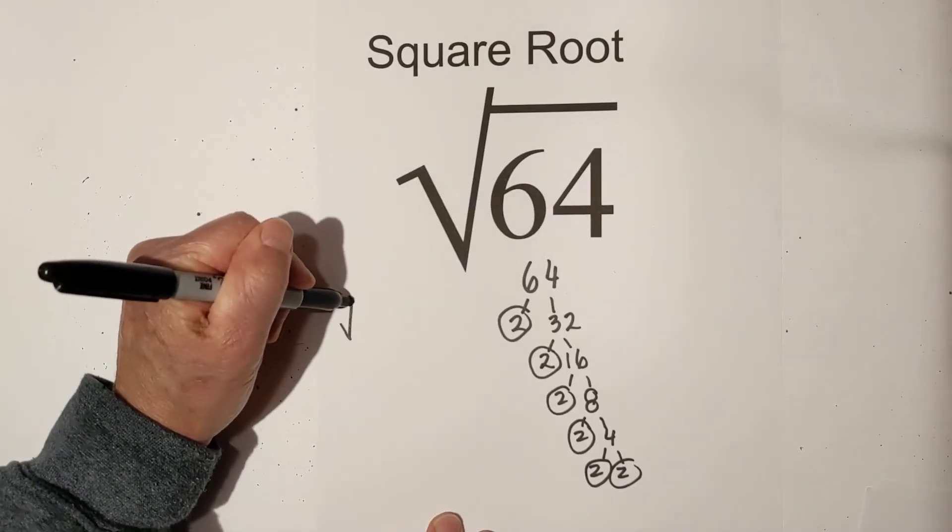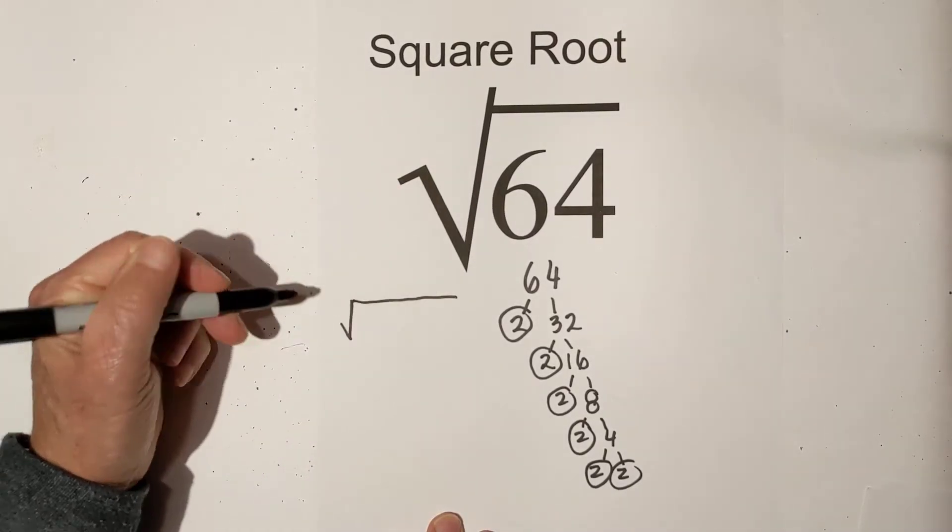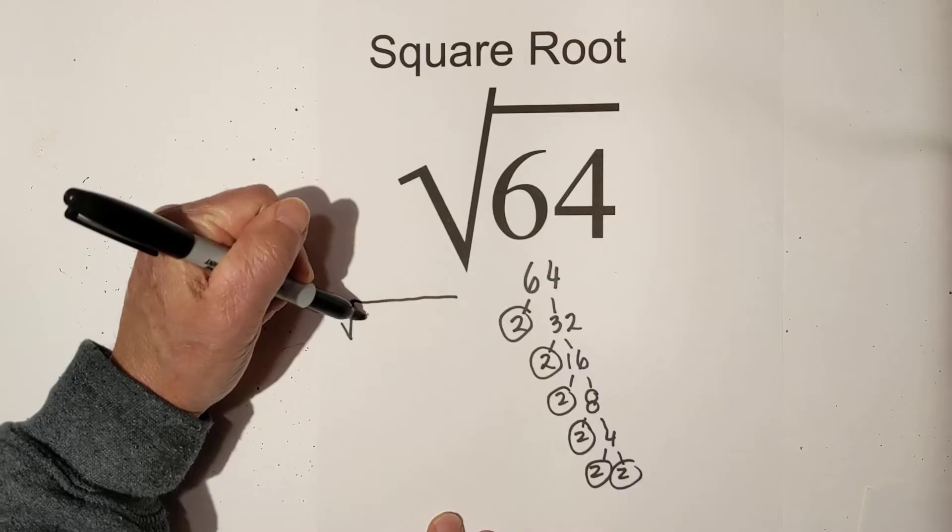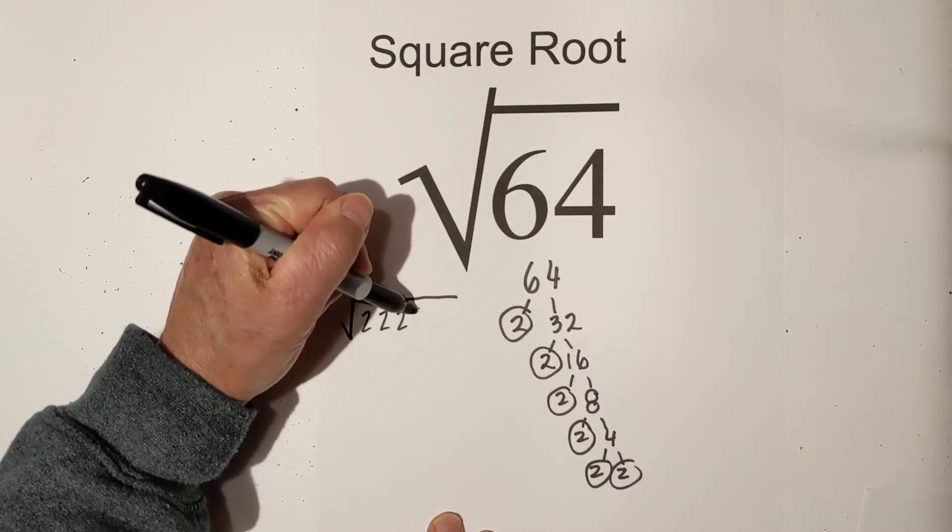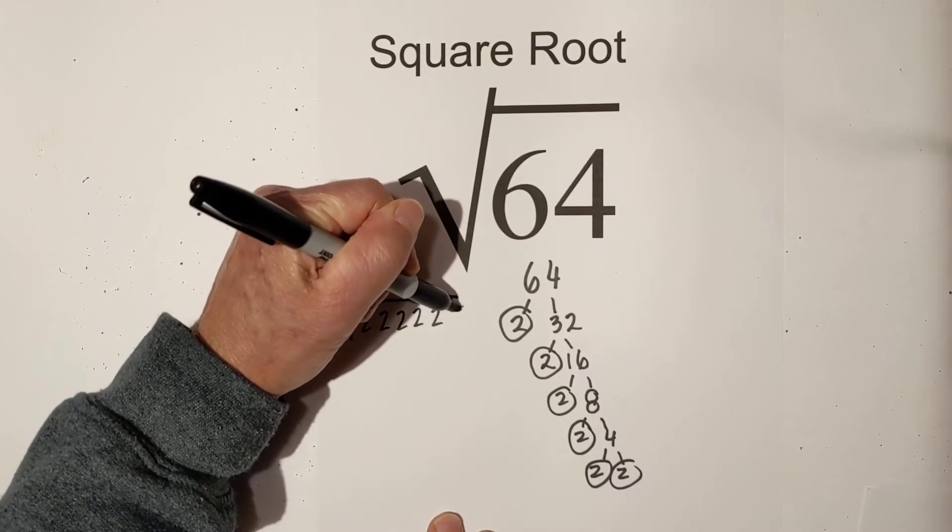So I'm going to put 6 2's under the square root sign. So we have 1, 2, 3, 4, 5, 6.